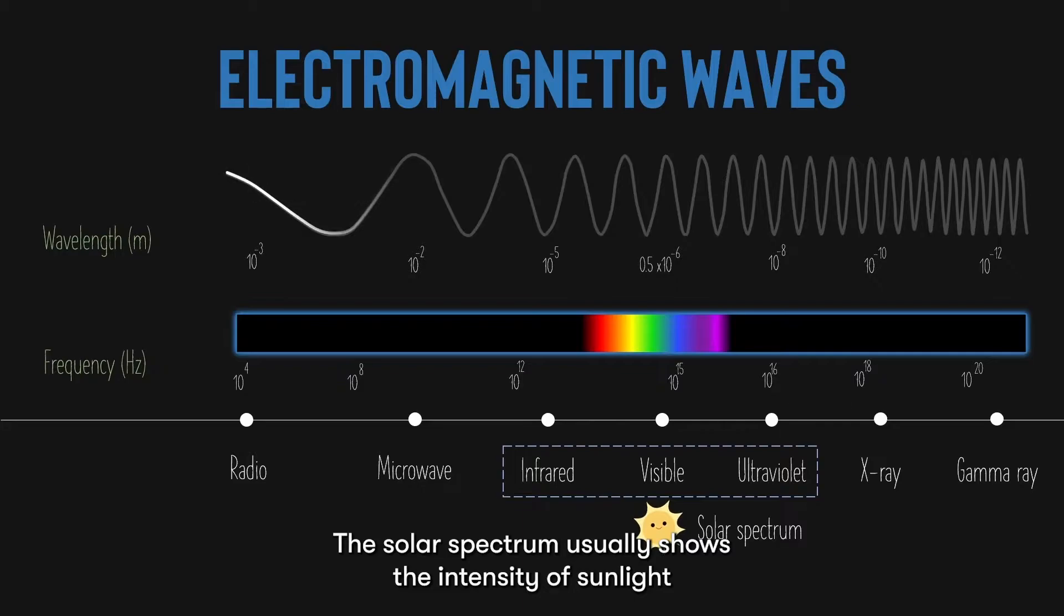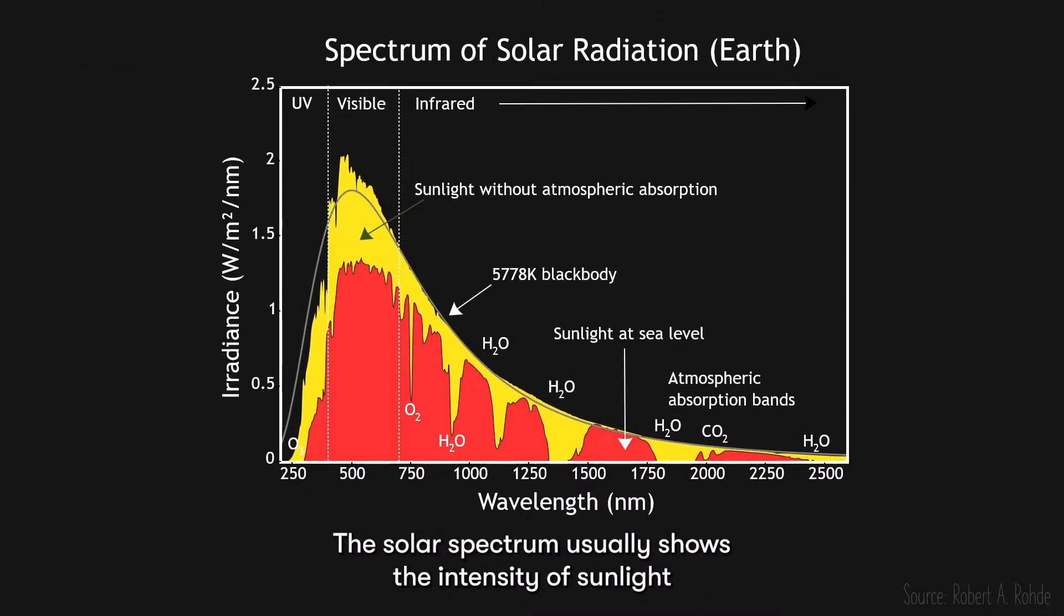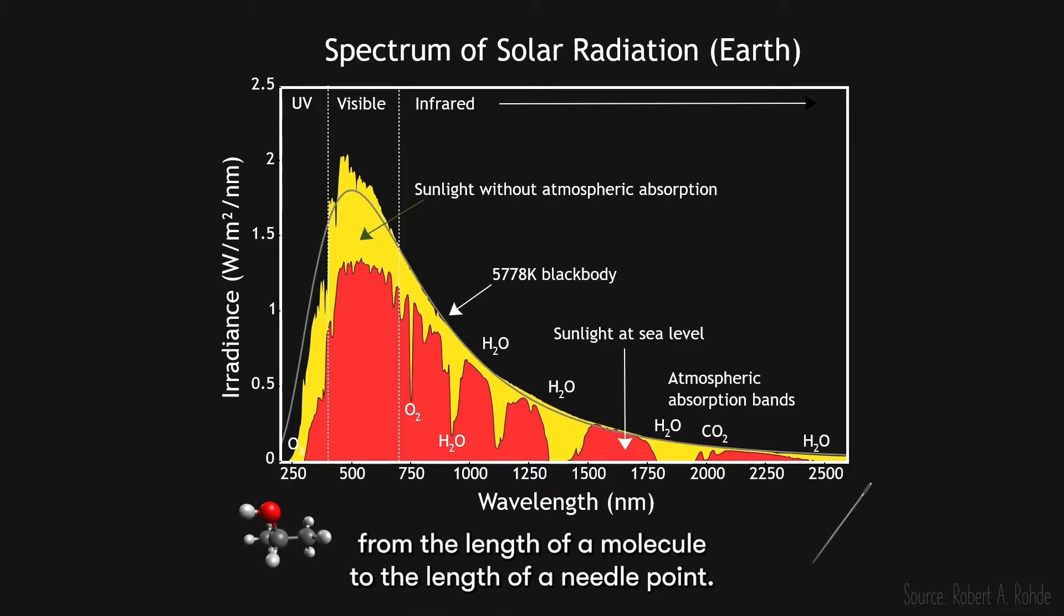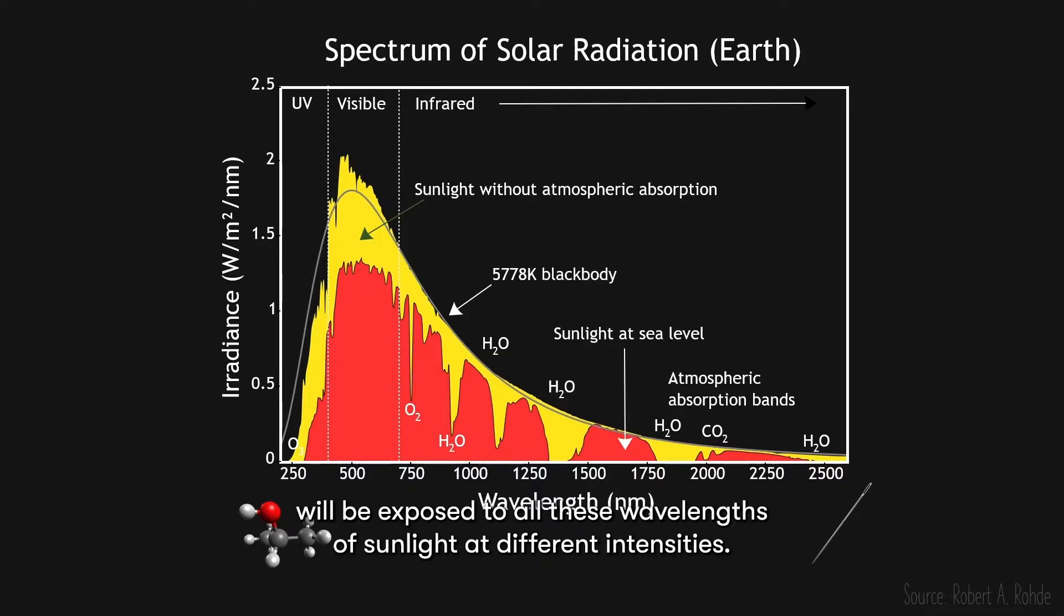The solar spectrum usually shows the intensity of sunlight across wavelengths of about 250 nm to 2500 nm, which is about from the length of a molecule to the length of a needlepoint. So, a solar cell under sunlight will be exposed to all these wavelengths of sunlight at different intensities.